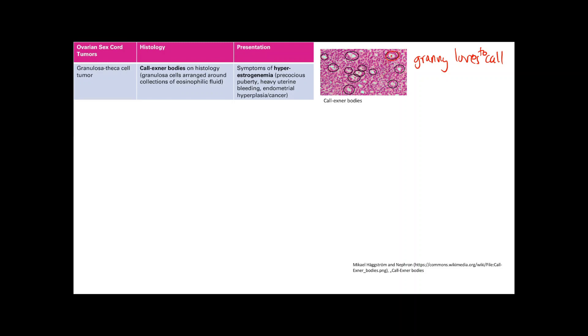You get symptoms of hyperestrogenemia because granulosa cells make estrogen. In kids you're going to see precocious puberty. In adult women you're going to see heavy uterine bleeding. Finally, you can see endometrial hyperplasia and endometrial cancer.